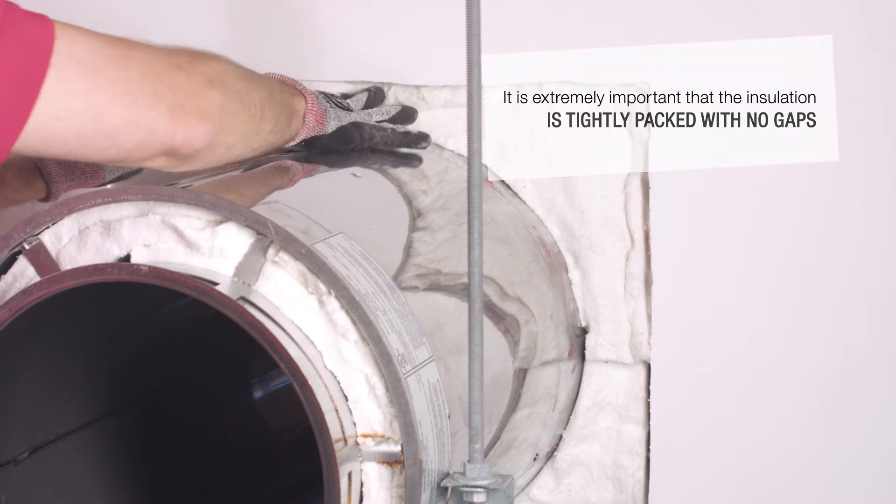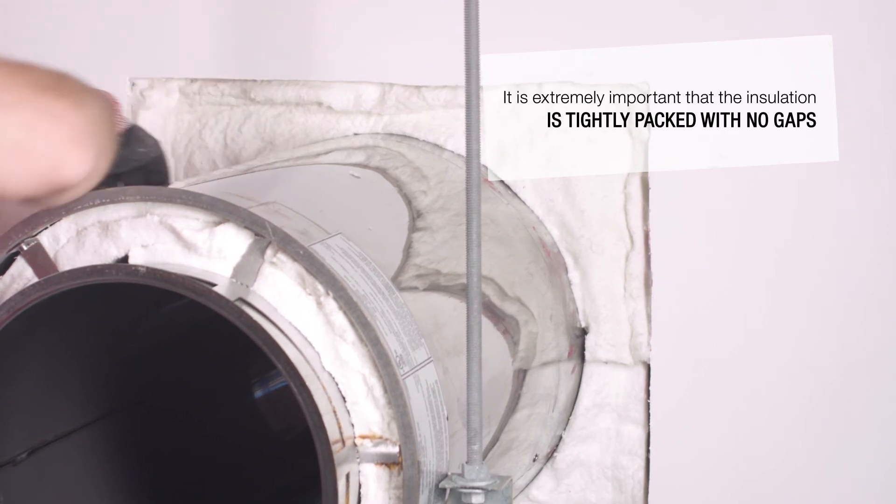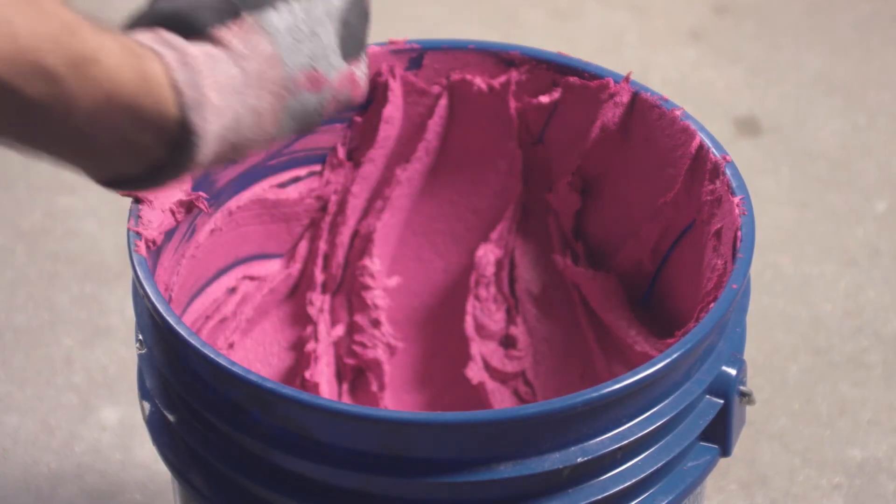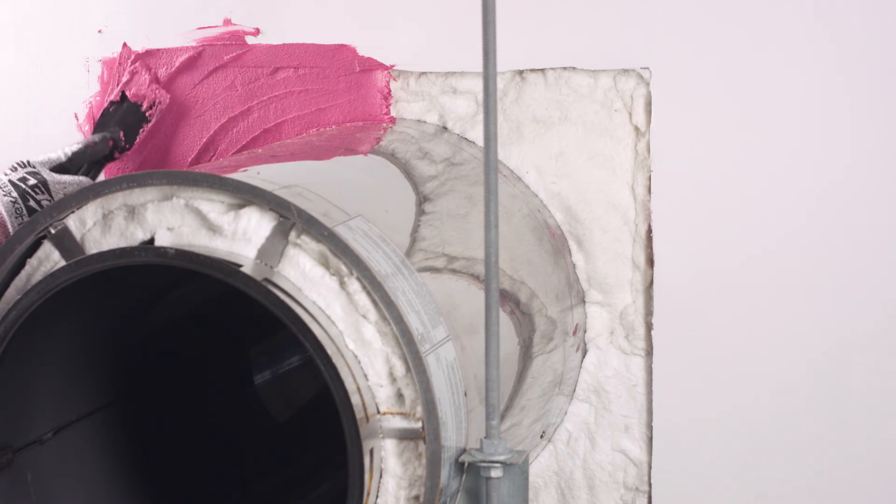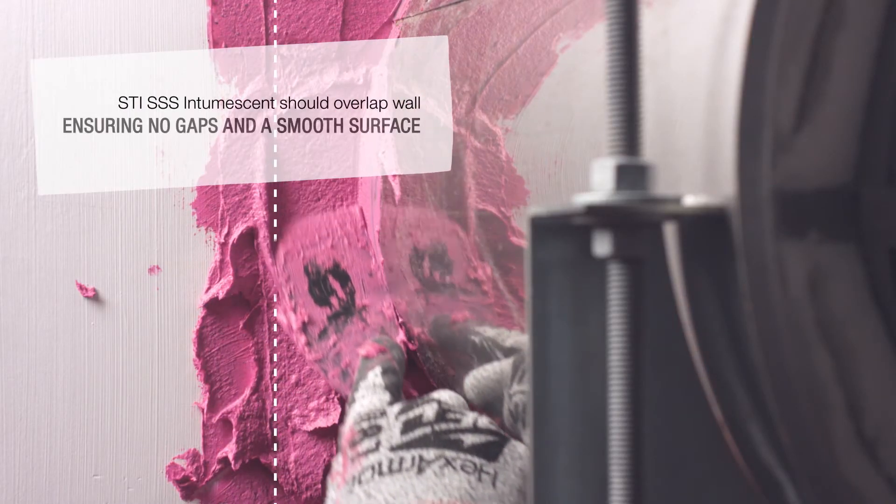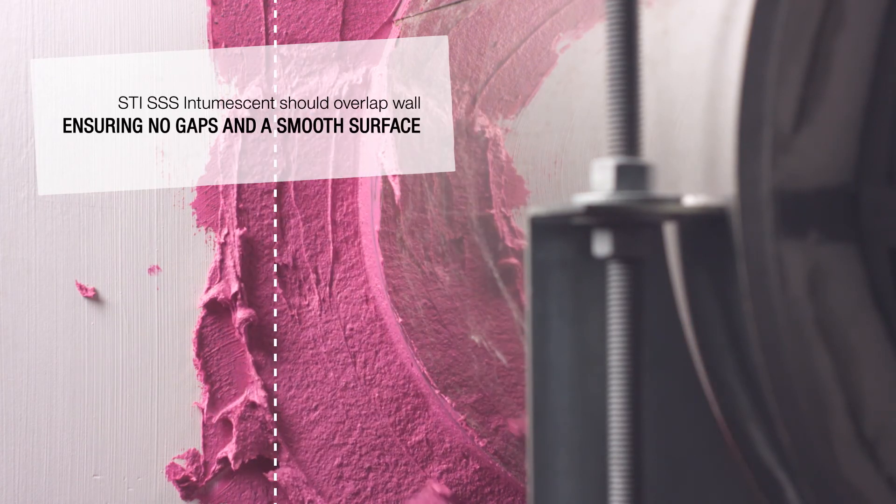It is extremely important that the insulation be packed tightly with no gaps. Using intumescent, fill the three quarter inch gap so the surface is level with the wall. The intumescent should overlap onto the wall, ensuring that there are no gaps between the edges of the opening and the duct's outer shell.